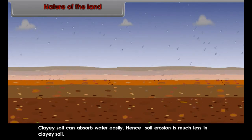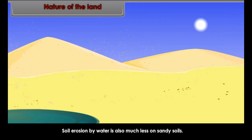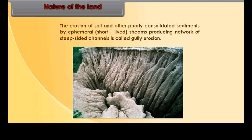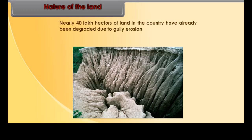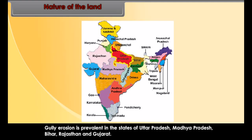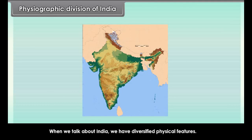Nature of the land. Nature of land is one of the important factors for soil erosion. Clay soil can absorb water easily, hence soil erosion is much less in clay soil. Soil erosion by water is also much less on sandy soils. Gully erosion — the erosion of soil and other poorly consolidated sediments by ephemeral, that is short-lived, streams producing a network of steep-sided channels is called gully erosion. Nearly 40 lakh hectares of land in the country have already been degraded due to gully erosion. Gully erosion is prevalent in the states of Uttar Pradesh, Madhya Pradesh, Bihar, Rajasthan and Gujarat.